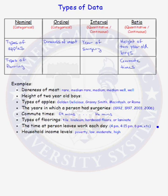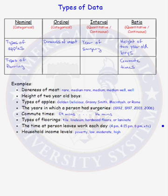Looking at the time a person leaves work each day — whether it be 4 pm, 4:15, 6 pm, etc. — the time a person leaves work is an interval data type. Why? There's a natural ordering: the person who left at 4 pm left before a person who left at 6 pm. Differences make sense: the person who left at 6 pm left two hours later than the person who left at 4 pm. But does it make sense to form a ratio of 6 pm to 4 pm? No, a ratio doesn't make sense. Therefore, we have an interval type of data.